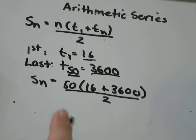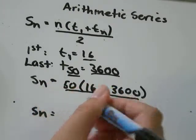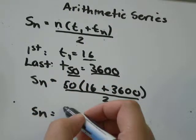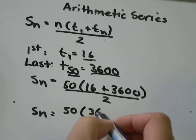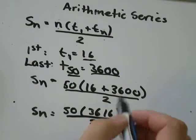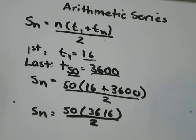From here on out you can just stick it in your calculator. 3600 plus 16 would be 3616, divided by 2. So I'll just go 3616 times 50,